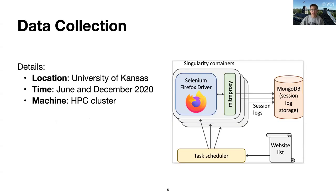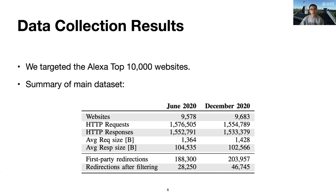We collected our data in both June and December 2020 using an HPC cluster at the University of Kansas. We used our automated tool built with security containers and Selenium to visit the Alexa top 10,000 websites. For each website, we visited the homepage for 30 seconds and stored all data into MongoDB using a mitmproxy. We targeted Alexa top 10,000 websites, minus the websites that failed to return any content or returned HTTP errors. By the end, we successfully visited around 9,500 websites in June and 9,600 websites in December. The below table is a summary of our dataset. For both June and December, we collected more than one and a half million requests or responses, and there are almost 190,000 first-party redirections in the June dataset and 200,000 in December dataset.